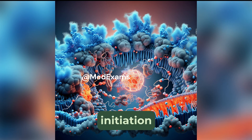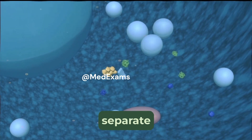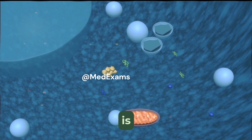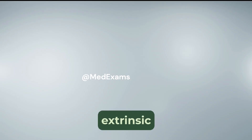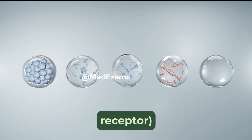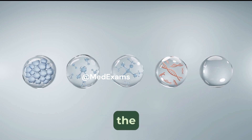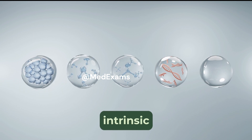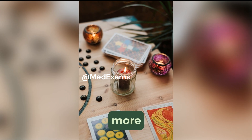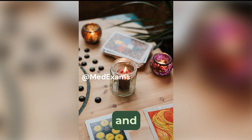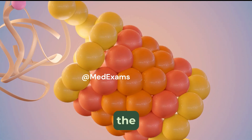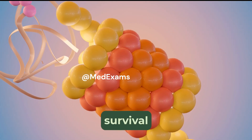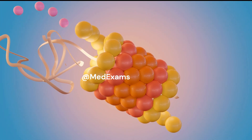The initiation of apoptosis occurs via signals from two separate pathways: the intrinsic, also known as the mitochondrial pathway, and the extrinsic, also known as the death receptor pathway. In the intrinsic pathway, the mitochondria become more permeable and pro-apoptotic substances are released into the cytoplasm in response to stress or the cessation of survival signals.